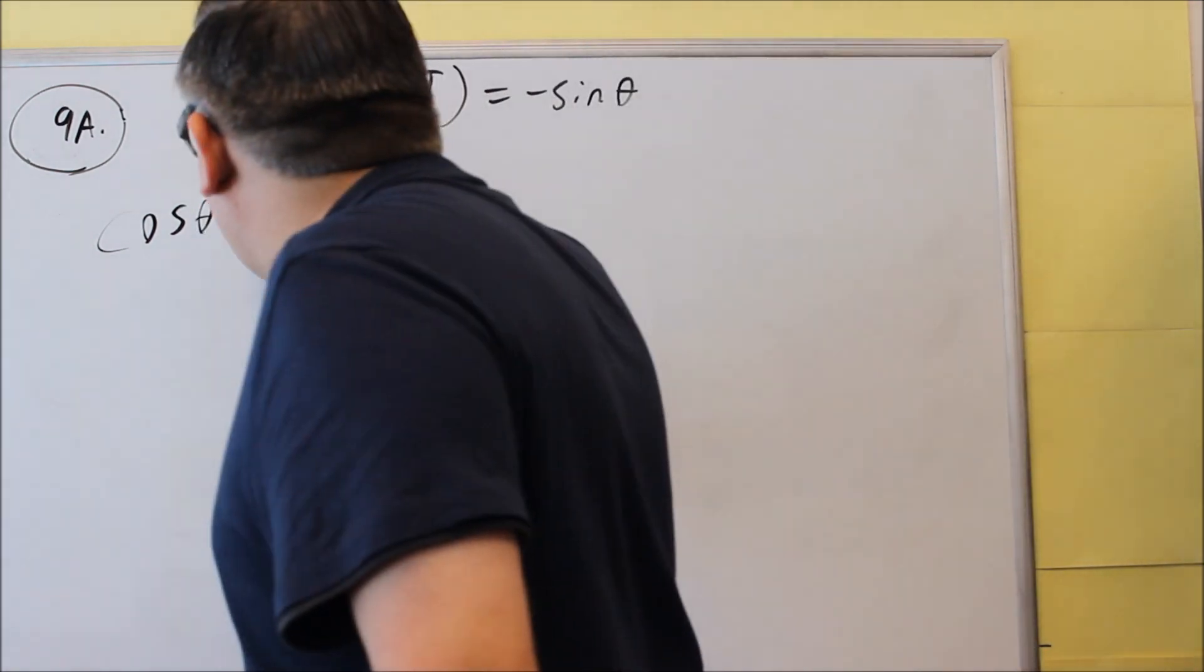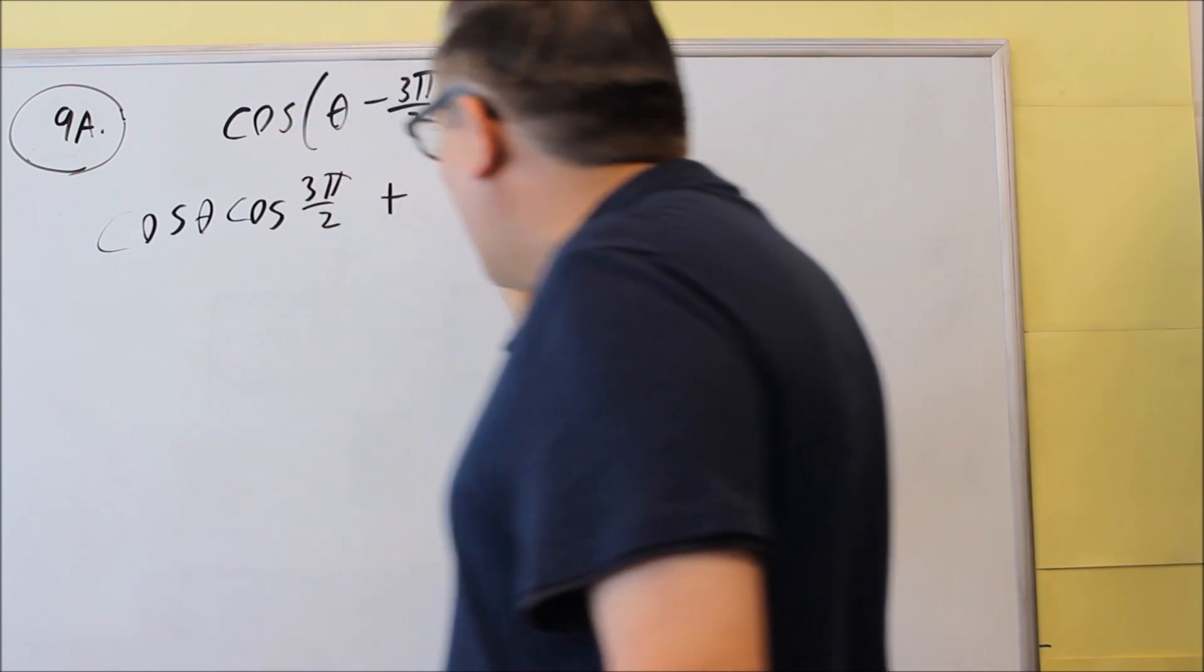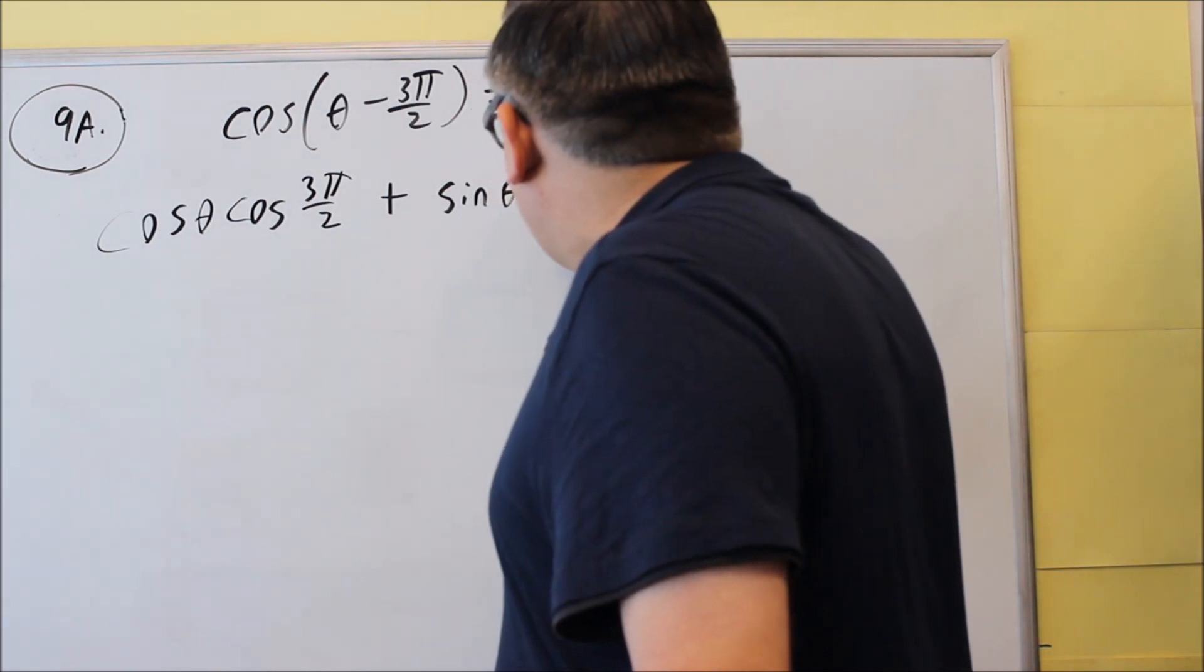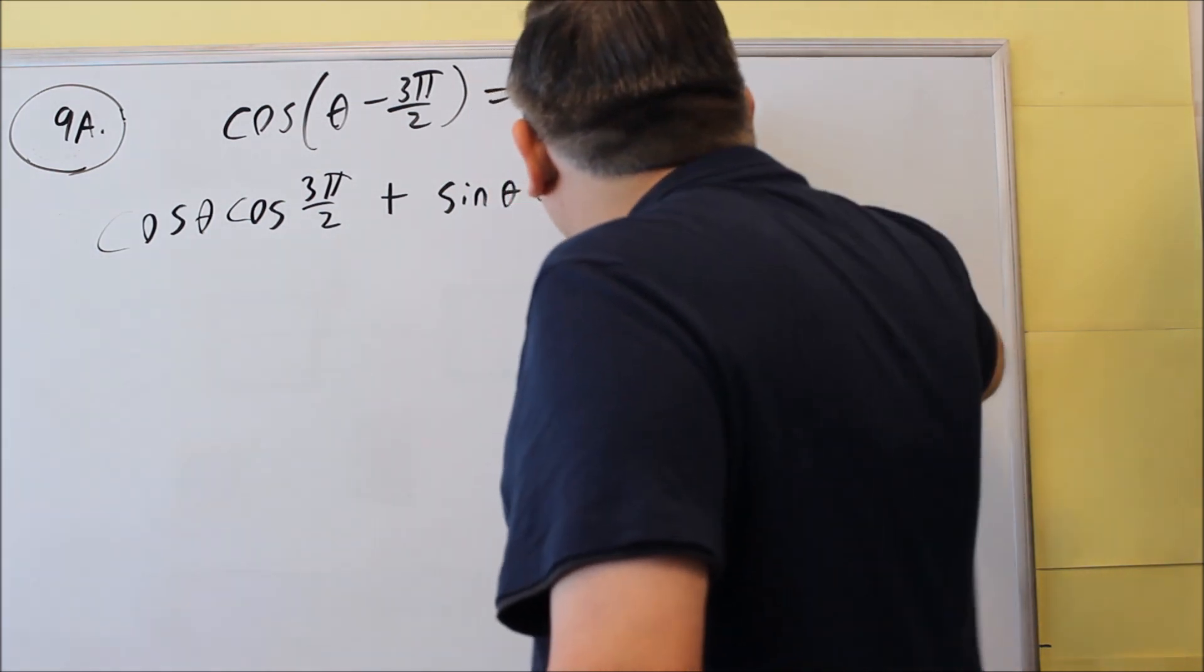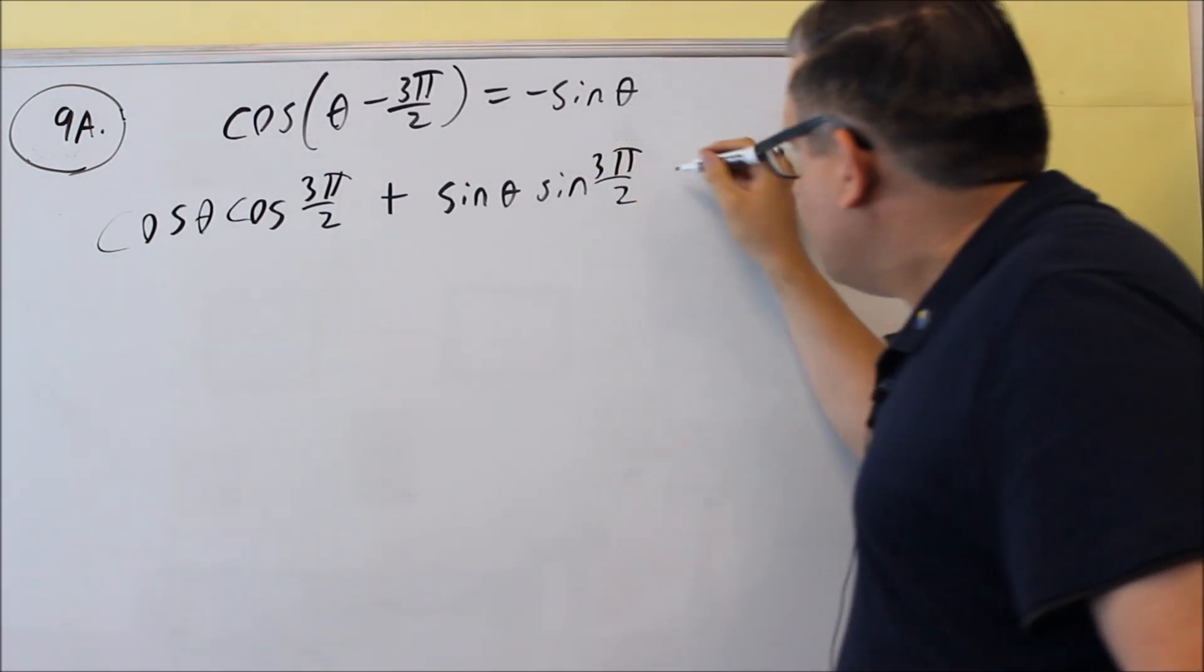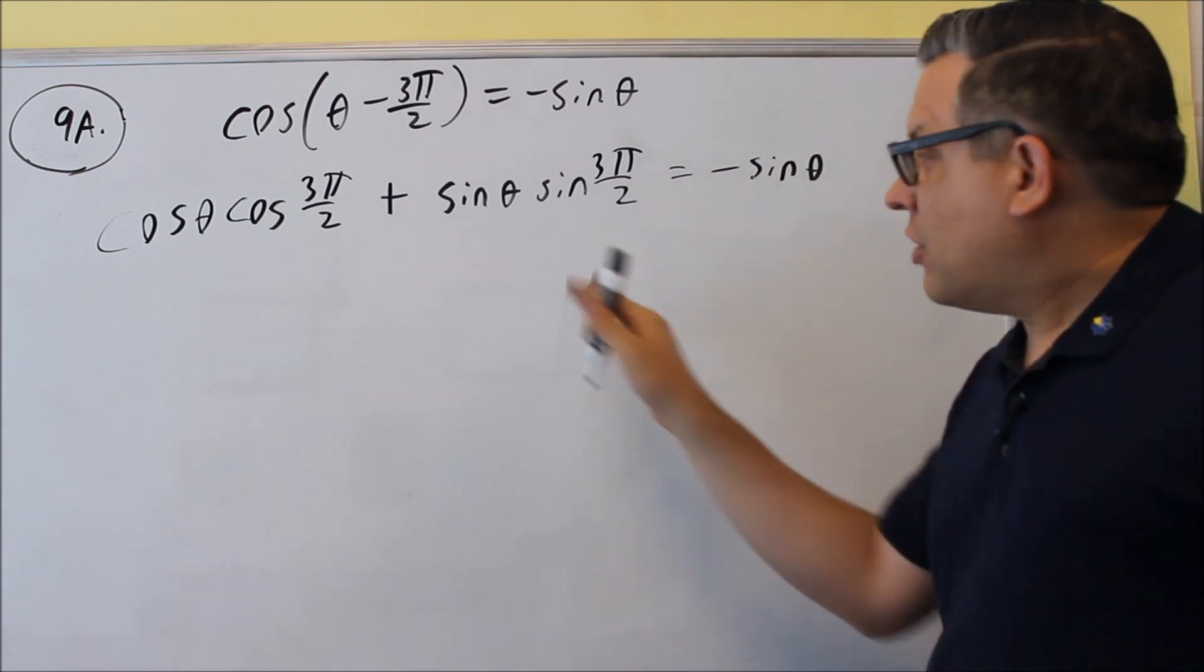So this is from the difference formula for cosine, so I'm going to do cosine θ, cosine 3π over 2, plus, this has got to be the opposite sign of this one, so plus, sine θ, sine 3π over 2. And I'm not going to do anything with the right hand side, I'm just going to work out the left hand side.